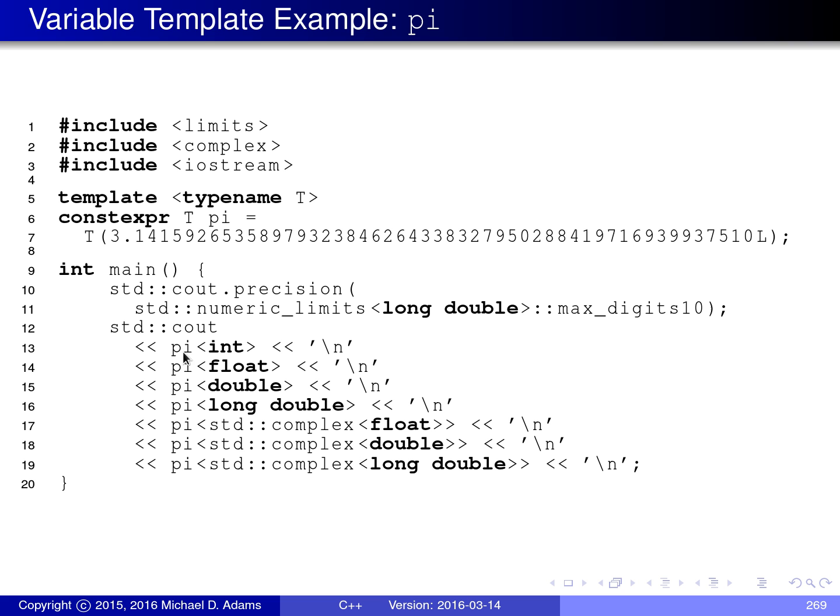And then we print out the value of pi but instantiated for various different type parameters. So here we're instantiating the pi variable template with the type int. So T is going to be set to int and this is going to print out as just 3 because when we convert this number here to an int, it's going to truncate. So basically all the digits after the decimal place are discarded and this will just have the value 3.